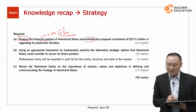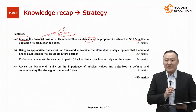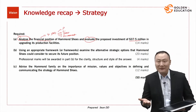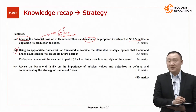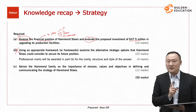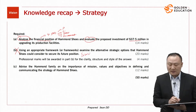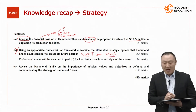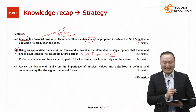The second requirement is to evaluate the proposed investment of $37.5 million in upgrading production facilities — is it good enough, is it beneficial? We will not discuss requirement B, which asks you to use the TOS model to analyze the SWOT condition. Without studying both SWOT and TOS models, question B is very difficult and impossible to analyze.